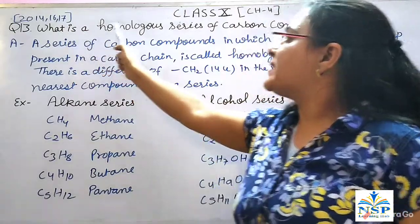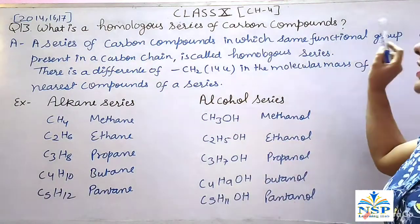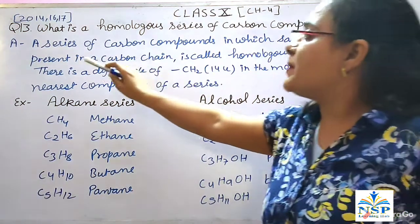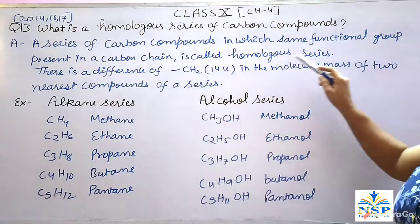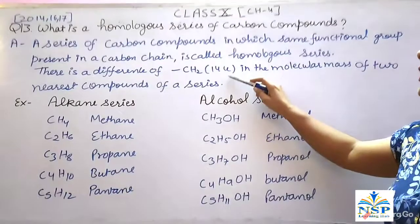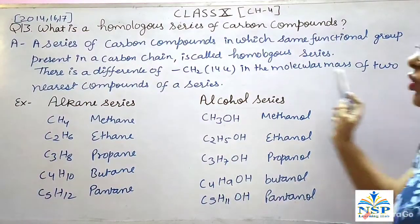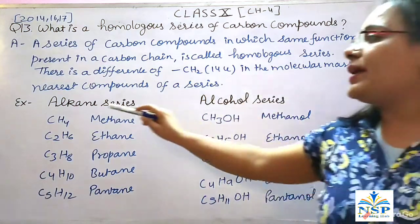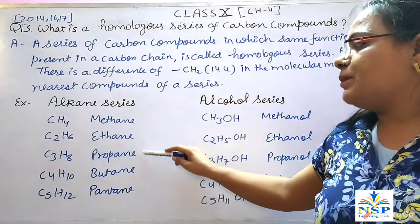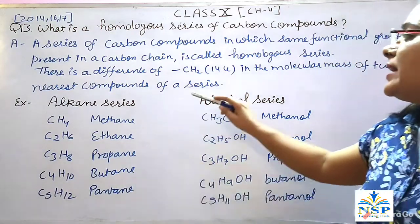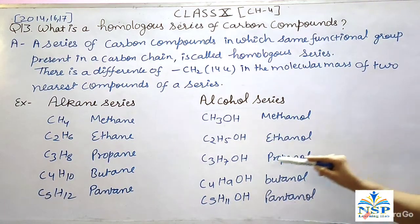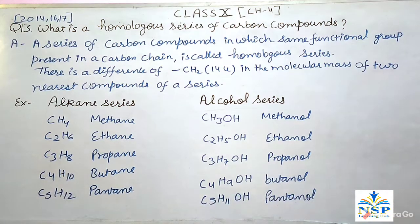Our next question: What is a homologous series of carbon compounds? A series of carbon compounds in which the same functional group is present in a carbon chain is called a homologous series. There is a difference of CH2 or 14u in the molecular mass of two nearest compounds in a series. For example, in the alkane series: methane, ethane, propane, butane, and pentane. Similarly, in the alcohol series: methanol, ethanol, propanol, butanol, and pentanol are the examples.